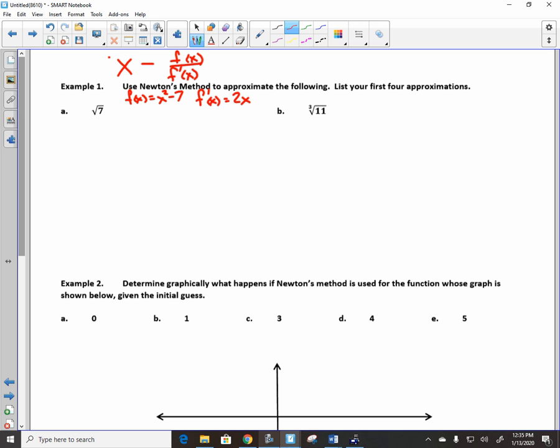So I do 3 minus... Where do I plug the 3 in then? To the function, right? To x squared minus 7. If you plug 3 into x squared minus 7, what do you get? You get 2. Over... Now where do I plug 3 in? To the derivative and you get 6. What's 3 minus 2 over 6? 2 and 2/3. Everybody agreed? I'm going to write 2 and 2/3 as 8/3, okay? And you'll see why in a second.